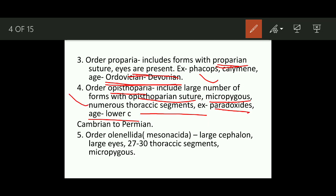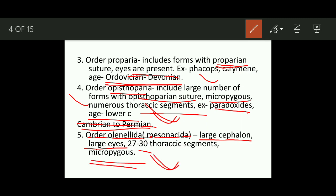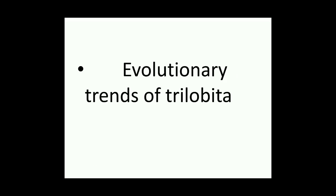The order Mesonacida is characterized by a large cephalon, which means this order is micropygous. The eyes are large, and the number of thoracic segments is 27 to 30. These are micropygous, so keep that in mind.